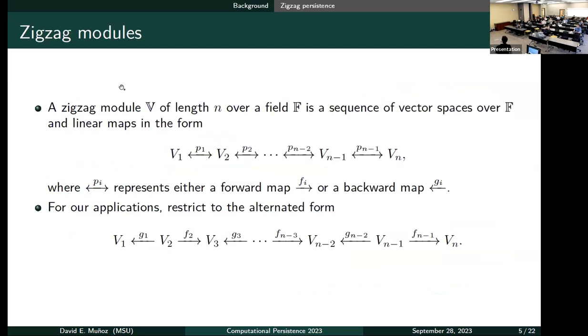First of all, zigzag persistence. Yesterday, Sarah Timochiko talked about this and explained it pretty well, so I won't get much into detail. But in general, the important part is that in zigzag persistence, we don't need to have a filtration. We don't require the inclusions to be in the same way.